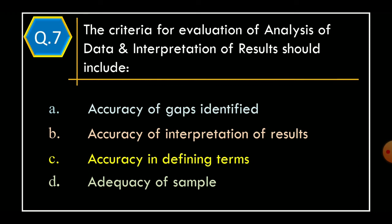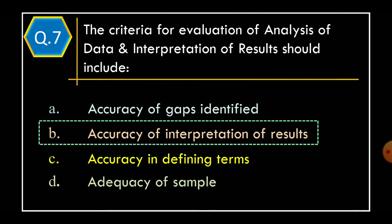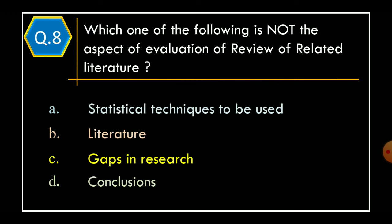Question 7: The criteria for evaluation of analysis of data and interpretation of results should include — Option A: Accuracy of Gaps Identified. Option B: Accuracy of Interpretation of Results. Option C: Accuracy in Defining Terms. Option D: Adequacy of Sample. The correct option is Option B, Accuracy of Interpretation of Results.